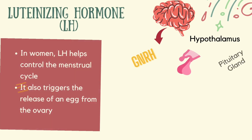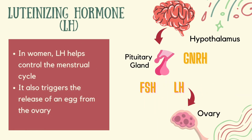Another one is the luteinizing hormone, or LH. In women, LH helps control the menstrual cycle. It also triggers the release of an egg from the ovary.